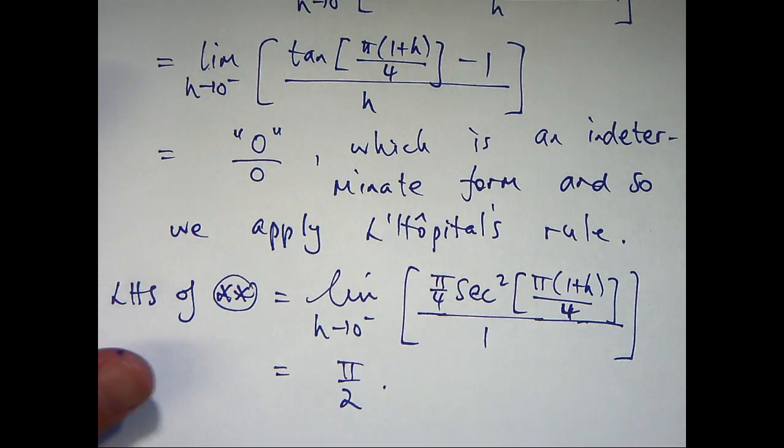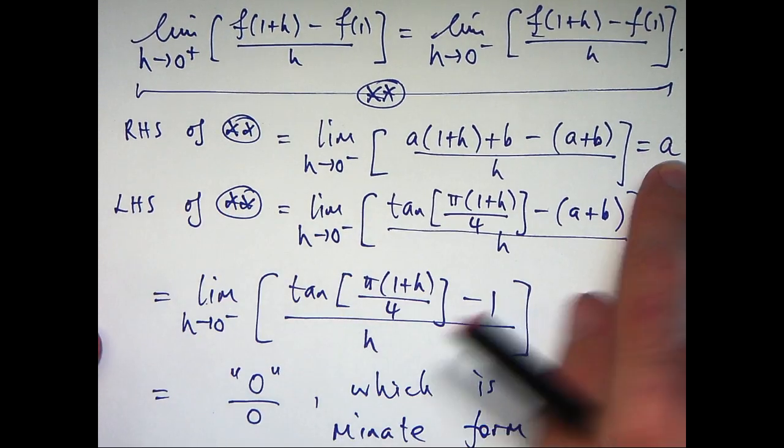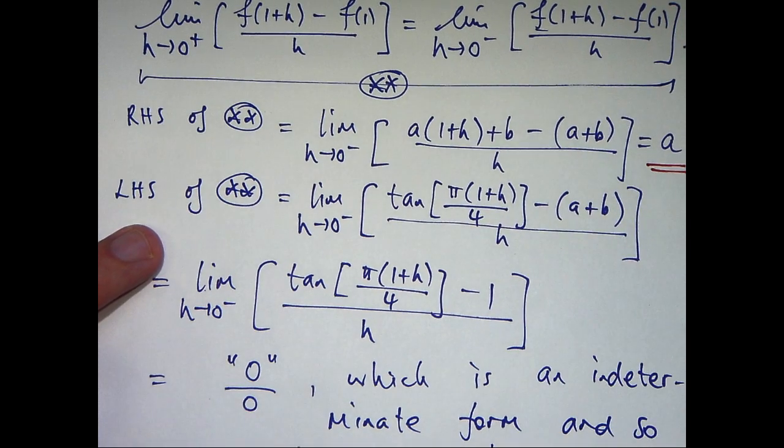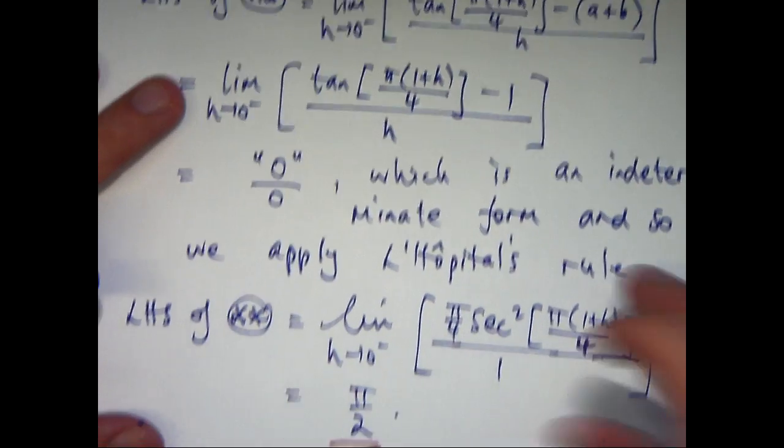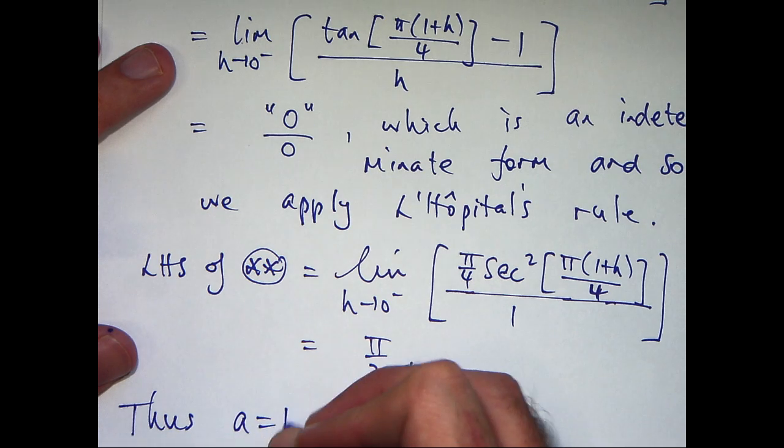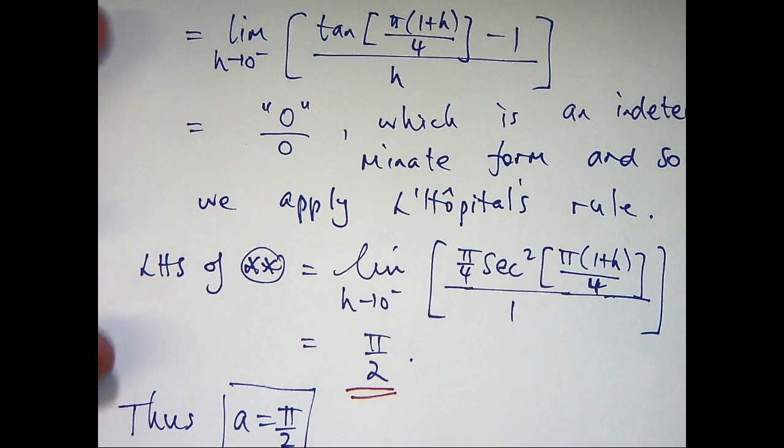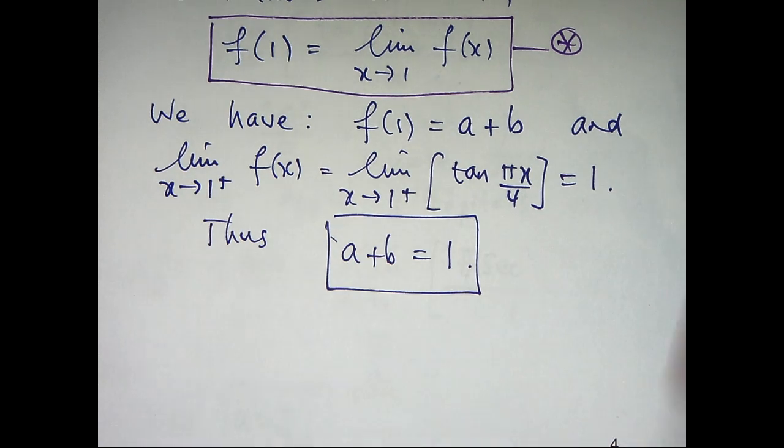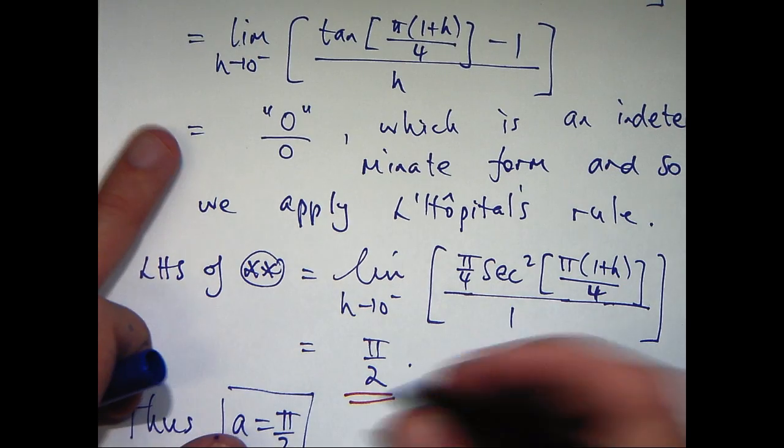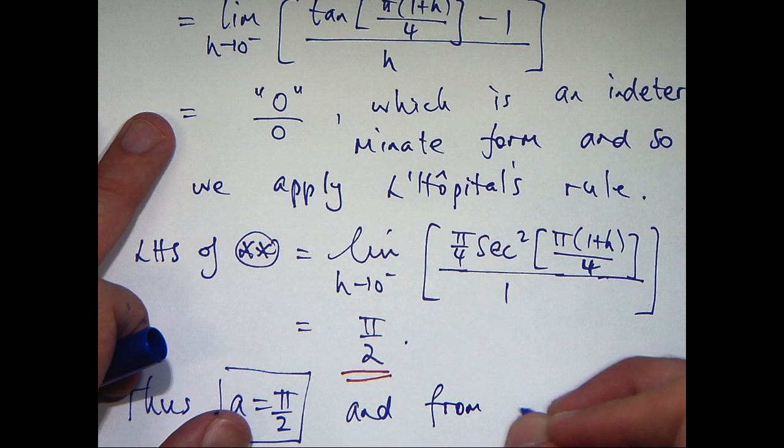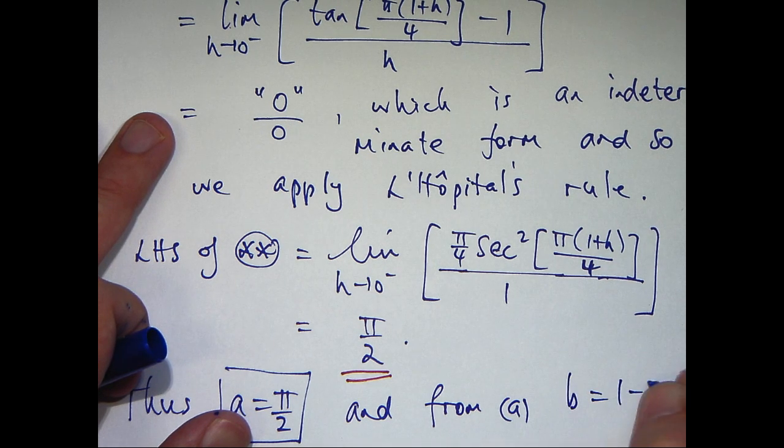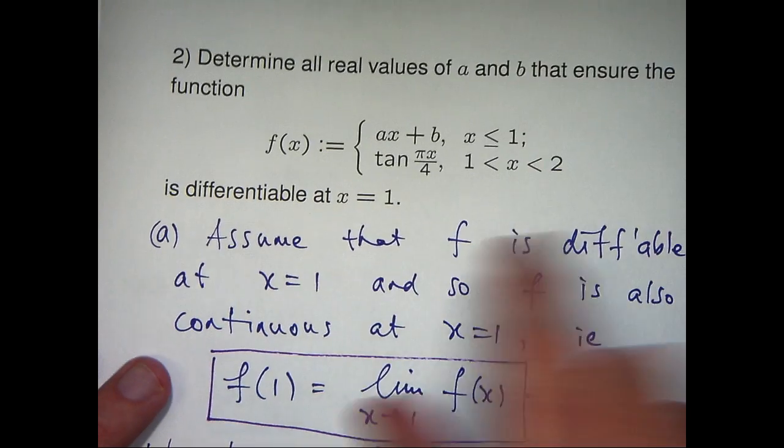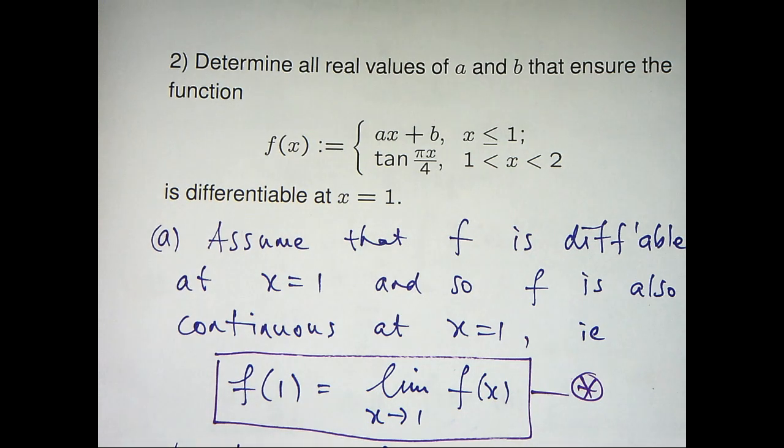So what have we accomplished there? The right-hand side of double star we calculated to be a. The left-hand side of double star is pi on 2. So, we know now that a must be equal to pi on 2. We now have a value for a. And if we go back to our earlier part a, a plus b equals 1, well, if a equals pi on 2, b must equal 1 minus pi on 2. So, we found both the values of a and b that forces f to be differentiable at x equals 1.